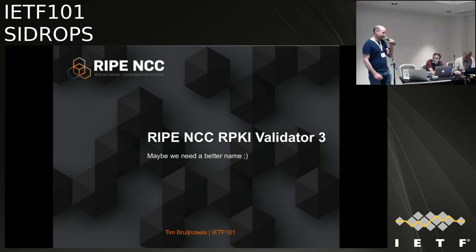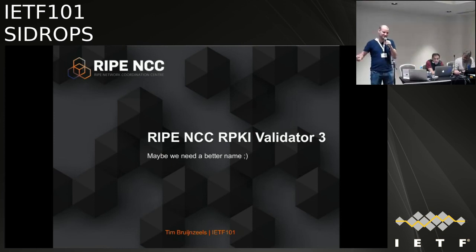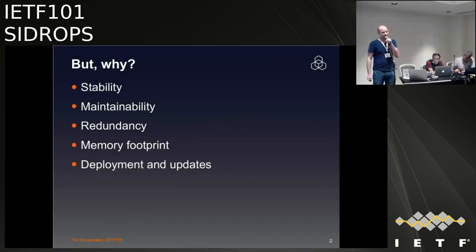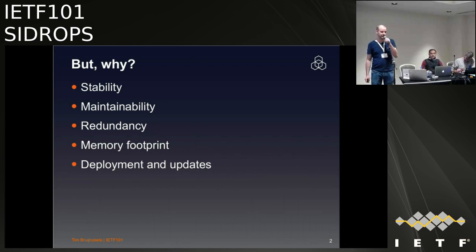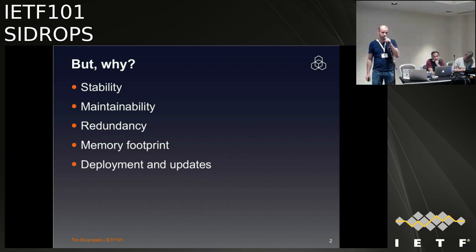Now the fun bit. I think we have the uncoolest name of all the validators out there by far, but I honestly couldn't think of a better one. We've been working on a new version of our RPKI validator. Some reasons why: stability, maintainability from a software point of view, because the old tool was written in Scala — whilst a pretty nice language, it's quite hard to find people who can maintain it. We also want to look at redundancy and deployment, reduce the memory footprint — the old one was keeping everything in memory — and look at the deployment and update model.